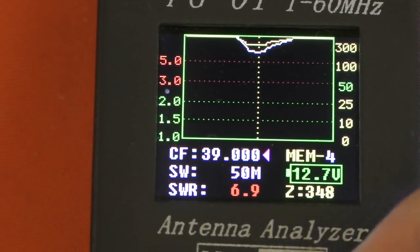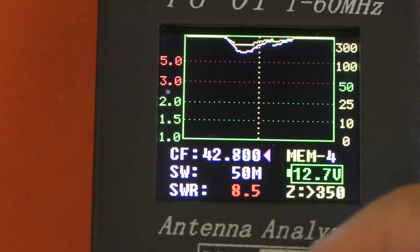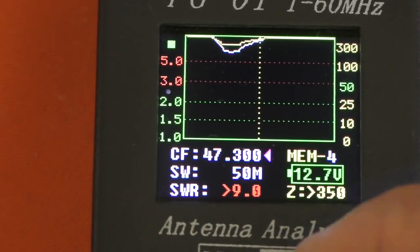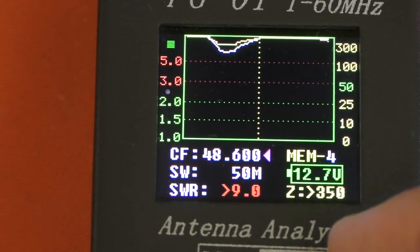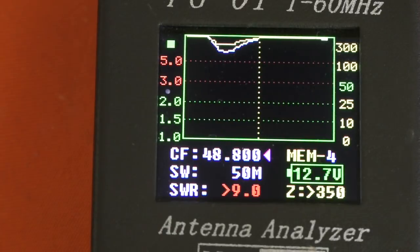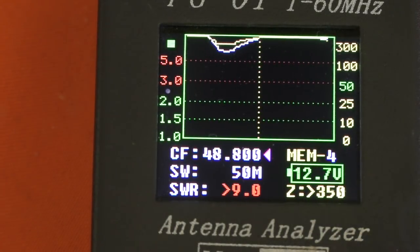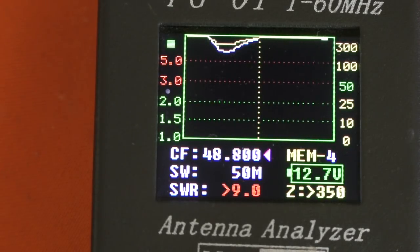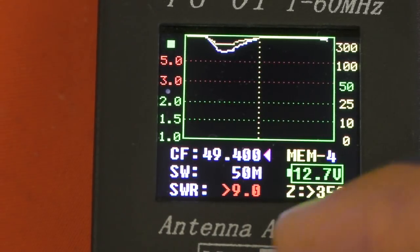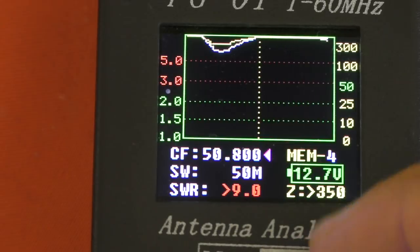And there we go - 48.6 megs, 48 megs. So that little hump falls between 10m and 6m. I can use that choke with no problems at all, because I'm only going to be interested in using it up here if I can get it to run on 6m.